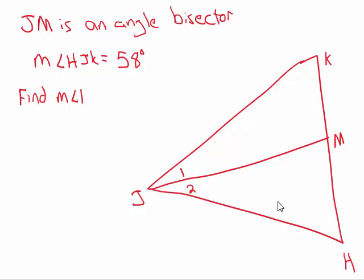So suppose I give you a triangle HJK, and I tell you that JM is an angle bisector. You're also told that the measure of angle HJK is 58 degrees. So from H to J to K, that would be this angle right here. The entire thing is 58 degrees.